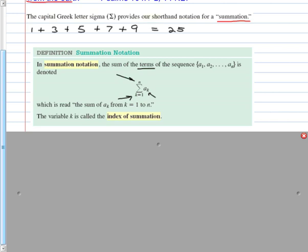Here's how we read it: the sum of A sub k from k equals 1 to n. Now you know a new language. We actually saw that in algebra too. The variable k is called the index of summation.